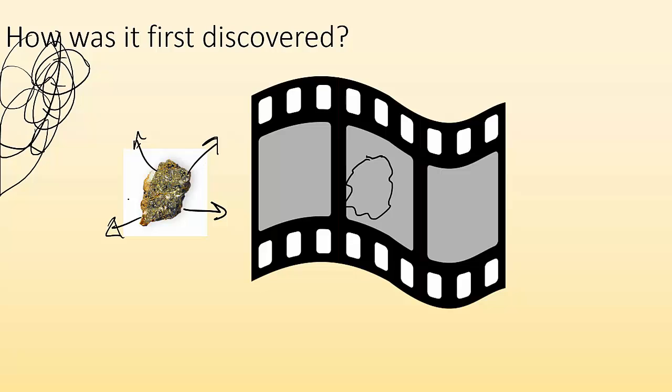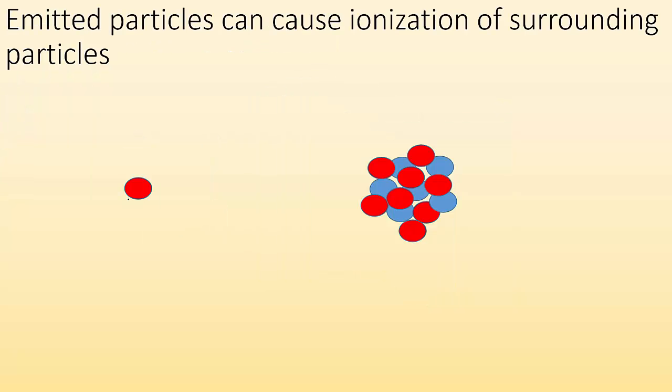It was Marie Curie who coined the phrase radiation, and they later figured out that it wasn't x-rays, because the particles that were coming off were charged. So what happens is, when you have radioactivity and you have radioactive particles being shot off, they can collide with other atoms, other nuclei, and cause them to ionize, which is helpful, because if we have charges, then we can do stuff with those charges, like detect them with electrical currents.